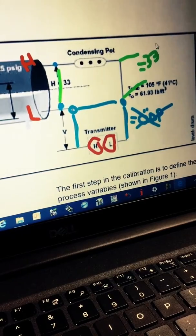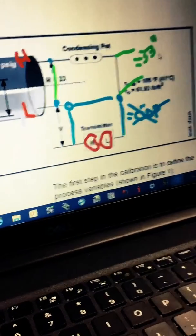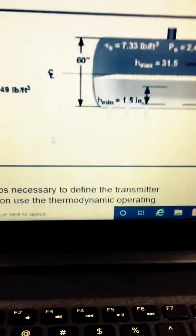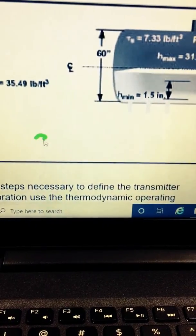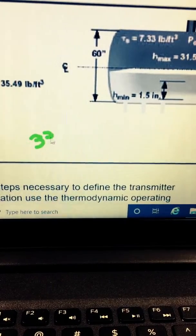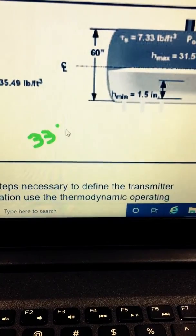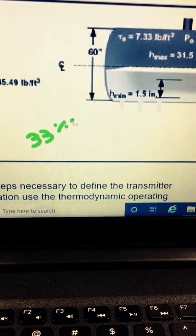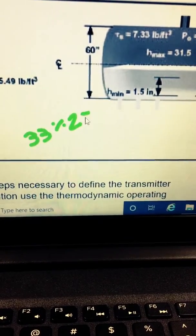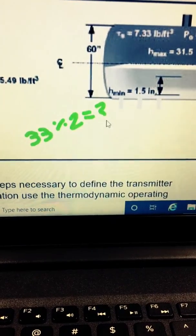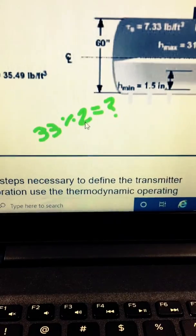So, 33 inches. Alright, so from the low of the drum to the high of the drum tap, we have 33 inches. And we're going to divide that by 2. And that's going to give us our values for upper range and lower range.